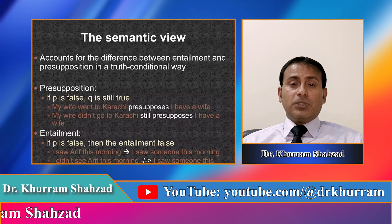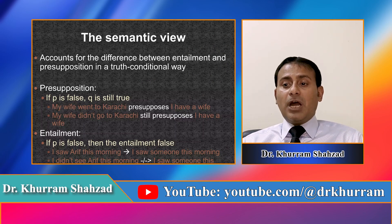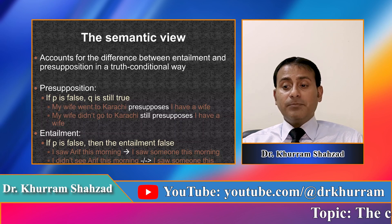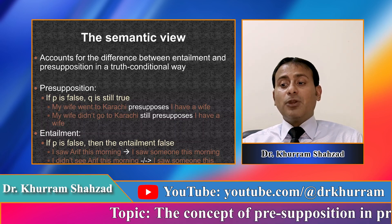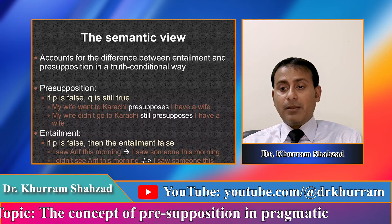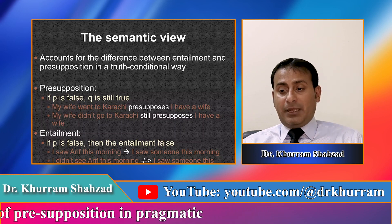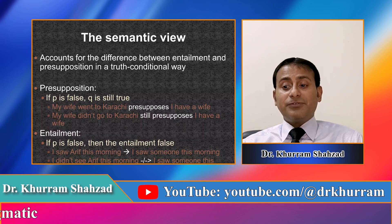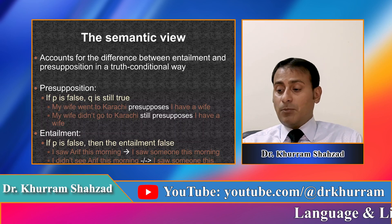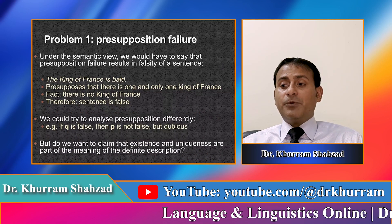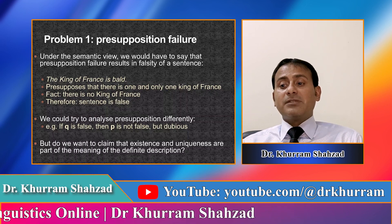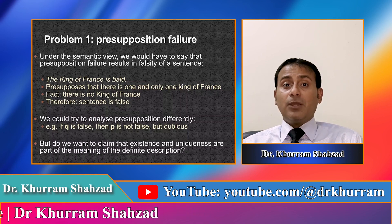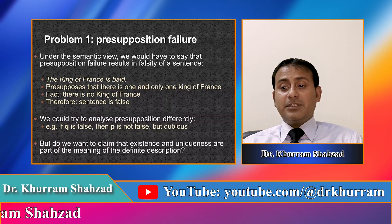There are two kinds of presupposition: semantic and pragmatic. The semantic view accounts for the difference between entailment and presupposition in a truth-conditional way. 'My wife went to Karachi' presupposes that I have a wife. 'My wife did not go to Karachi' still presupposes that I have a wife. 'I saw Arif this morning' entails I saw someone; 'I did not see Arif this morning' still presupposes I saw someone. Under the semantic view, presupposition failure results in falsity — 'The King of France is bald' presupposes one and only one King of France exists. In fact there is no King of France, therefore the sentence is false.